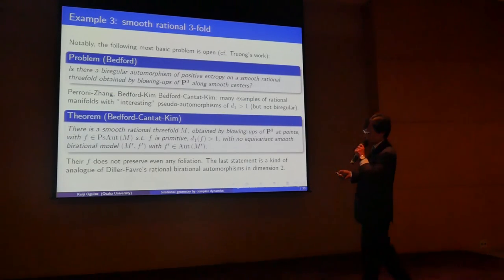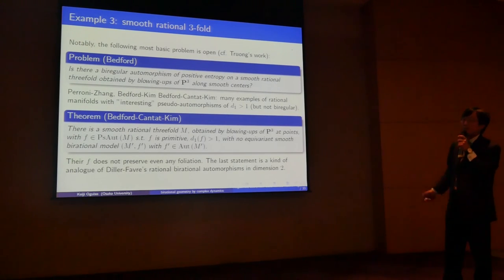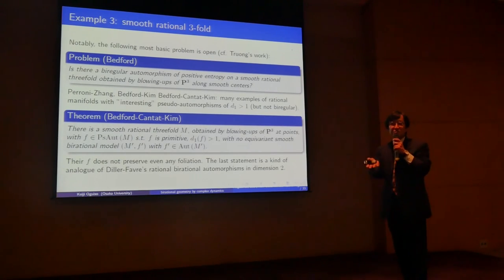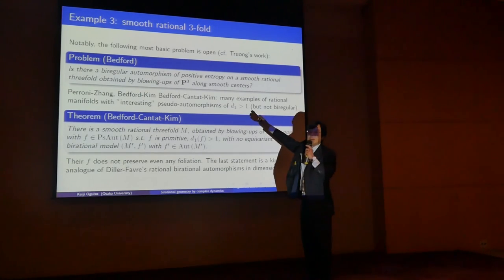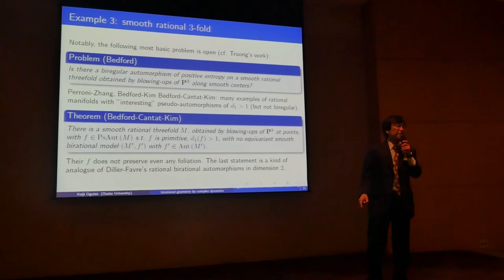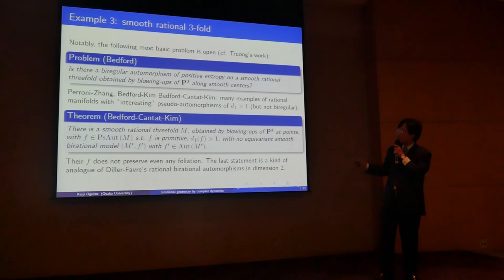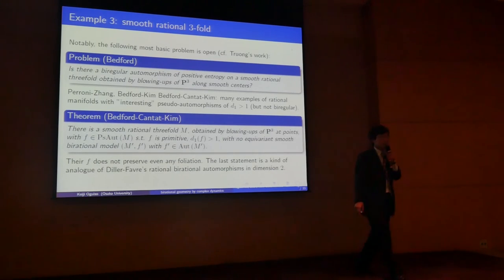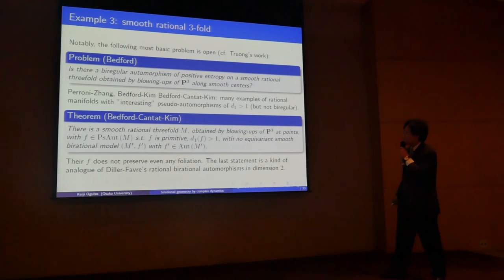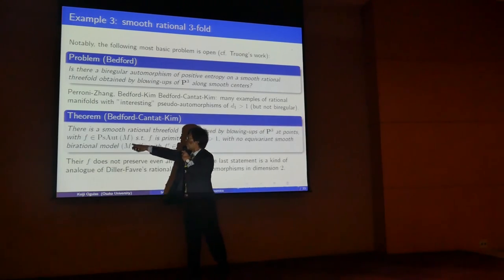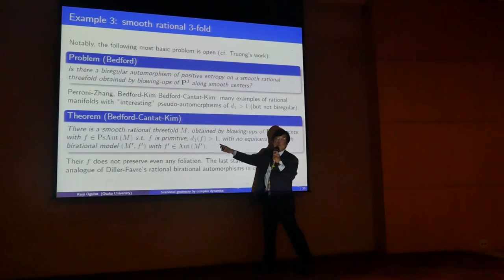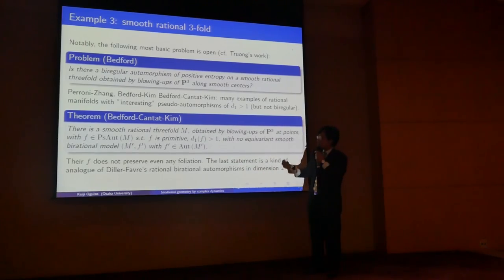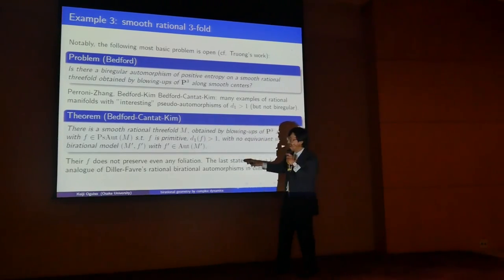The rational surface case situation is worse. For example, the following question is completely open: McMullen's example is constructed by blow-up of P2, but it is unknown whether one can construct positive entropy birational automorphisms just by blowing up smooth curves or points. There are many works in this direction. Notably, Bedford-Kim construct automorphisms of P2 which are primitive — this is good. The first dynamical degree is greater than or equal to 1, so if it is conjugated to an automorphism then topological entropy is positive. But they also show there is no way to make it biregular.